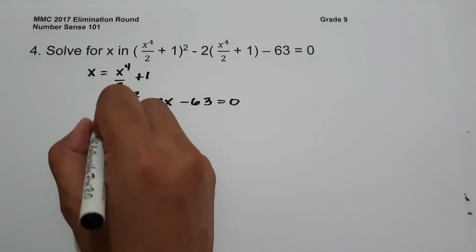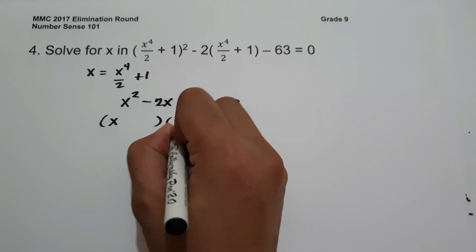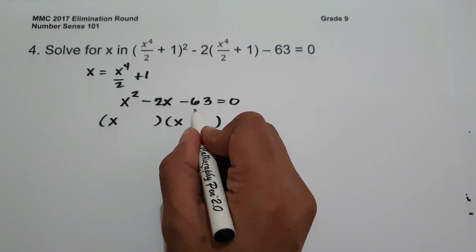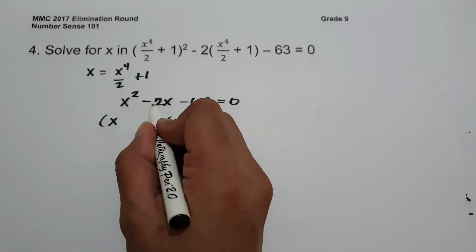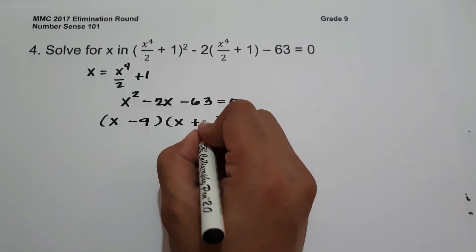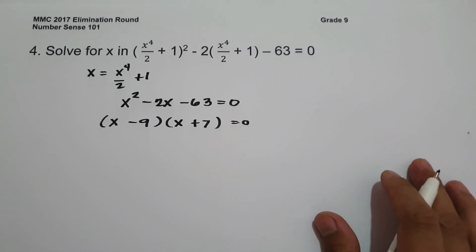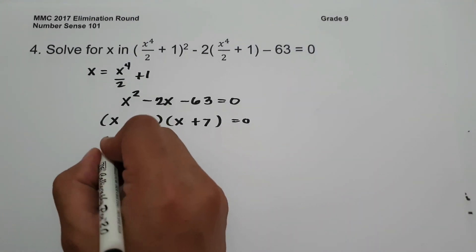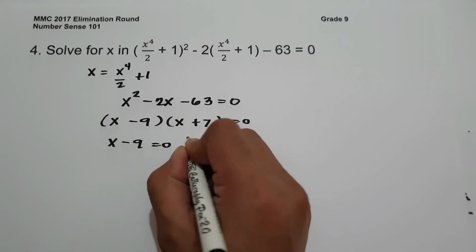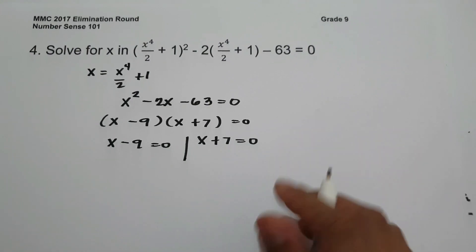The factors of x squared are x and x. We need two numbers that multiply to negative 63 and add to negative 2, which are negative 9 and positive 7. Setting each factor equal to 0: x minus 9 equals 0 and x plus 7 equals 0.